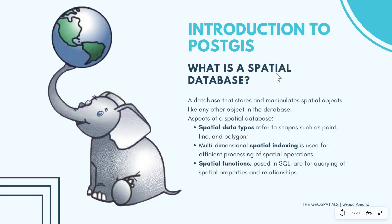The most important thing to know is what a spatial database is. It is simply a database that is able to store and manipulate spatial objects, and it has three aspects: spatial data types, which can either be points, lines, or polygons; spatial indexing, which is used for easy and fast retrieval of spatial operations; and spatial functions, which are used for querying properties and relationships.